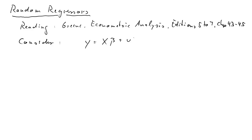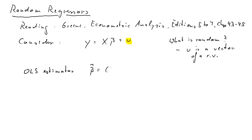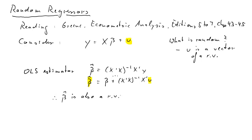Consider our model written in matrix form: y equals x beta plus u. Which parts are random? It's the u that is certainly a random vector — that's the vector of random variables. With this in mind, consider the OLS estimator: beta hat equals x prime x inverse x prime y. By substituting our regression equation and doing a few steps of algebra, we get beta hat equals beta plus x prime x inverse x prime u. Since there's a random term on the right-hand side, beta hat is also a random variable — that's the first important finding.